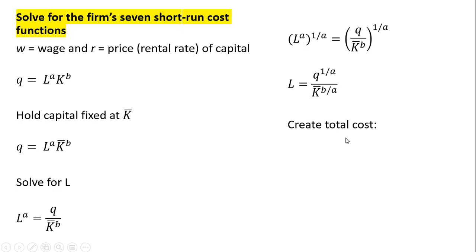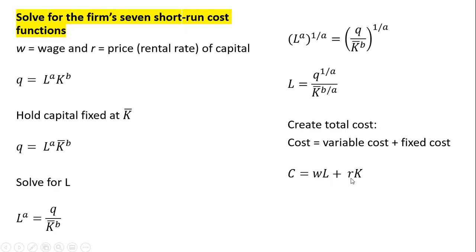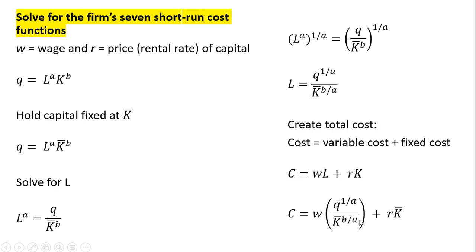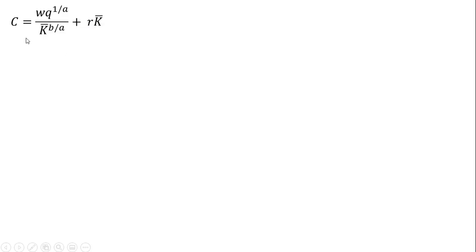Now we're going to create our total cost. In general, total cost or cost of production is variable cost plus fixed cost. Variable cost is the wage times units of labor, and fixed cost is the price of capital times units of capital. We're going to substitute in for L, plugging in our expression, and for K we plug in K bar because capital is fixed. Making our two substitutions, we have our cost function.